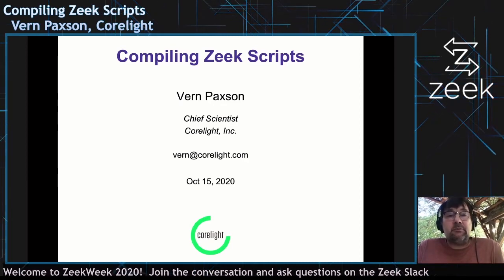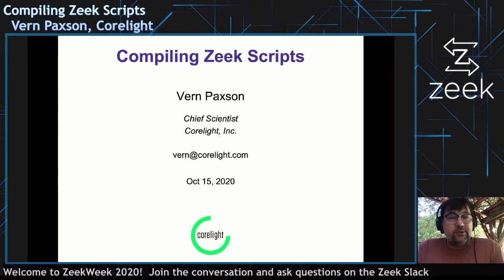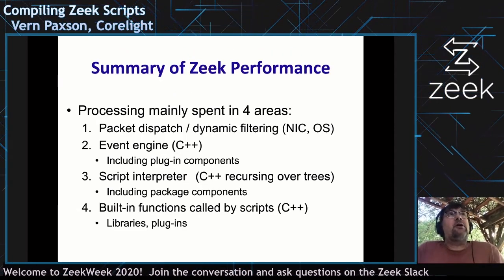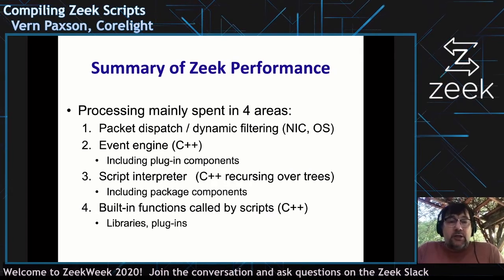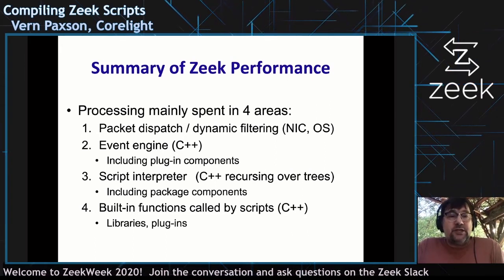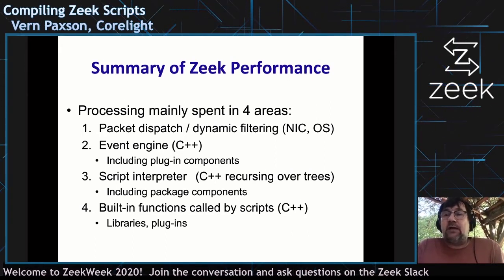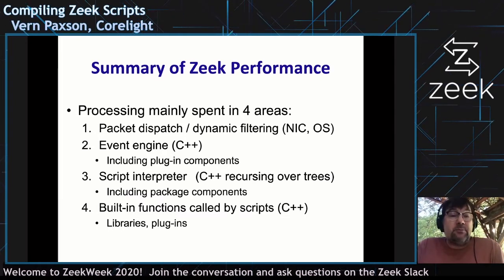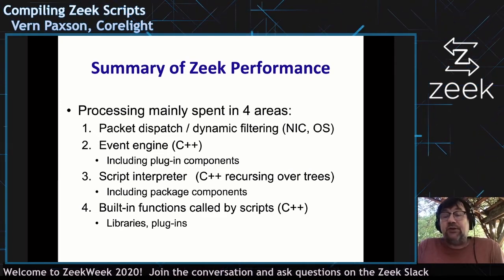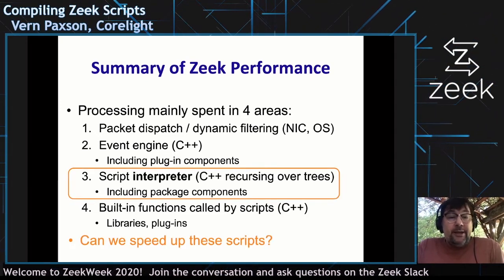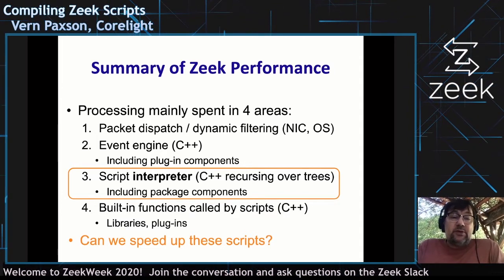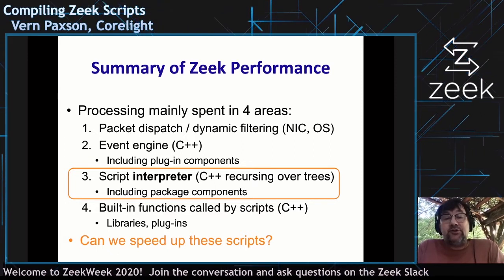Hopefully I'll find the right technical depth here. There are a lot of moving parts to this project. If you joined my talk yesterday, I was looking at how to think about Zeek performance in high-level terms. It has essentially four parts that all have to go fast: getting the packets, generating the events, interpreting scripts, and the built-in functions that scripts call. The key question this work looks at is: can we make those scripts go faster, given that they're interpreted?